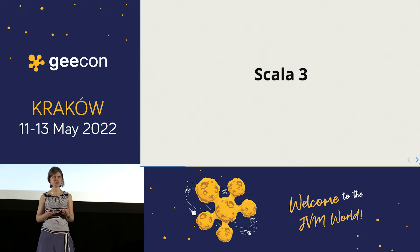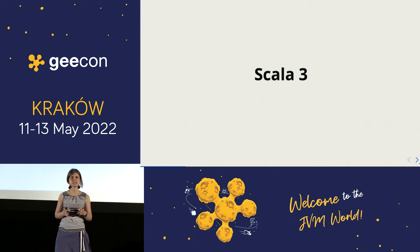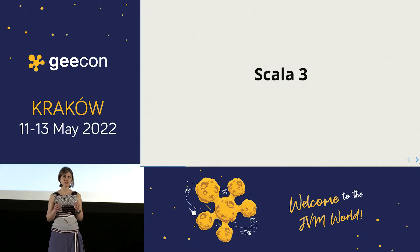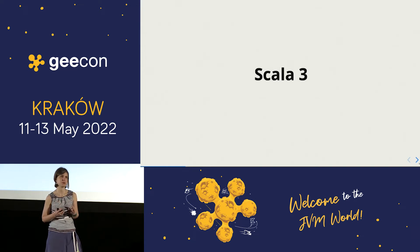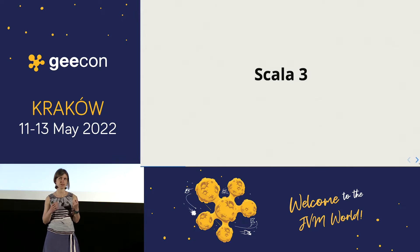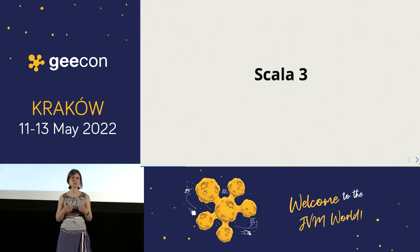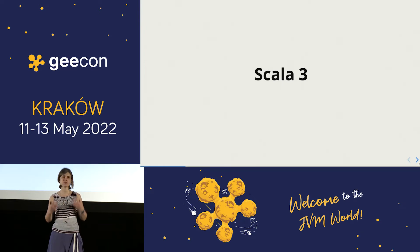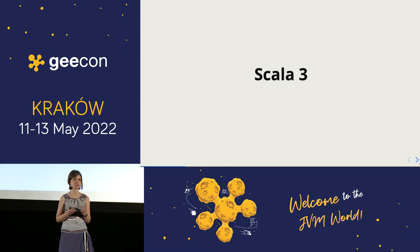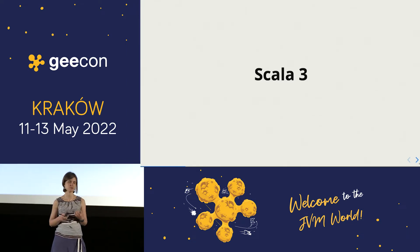So where does Scala 3 come in? What does it bring to the table? Generally, Scala 3 is a major language rewrite — it actually took eight years from the first commit to the final release. What's awesome and crucial is that the creators of the language decided to listen closely to what developers say. They saw how the language is used, what works, what doesn't work, what is confusing for people, what causes frustration. They decided that Scala 3 would be a language which is easier to use and makes your everyday life writing Scala a better experience. Implicits were selected as one of the main pain points.